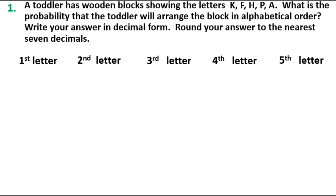We want to know the probability that the toddler will place block A first. We have five blocks here, and only one will go in this first slot. So the probability that the toddler will select the A is 1 in 5.